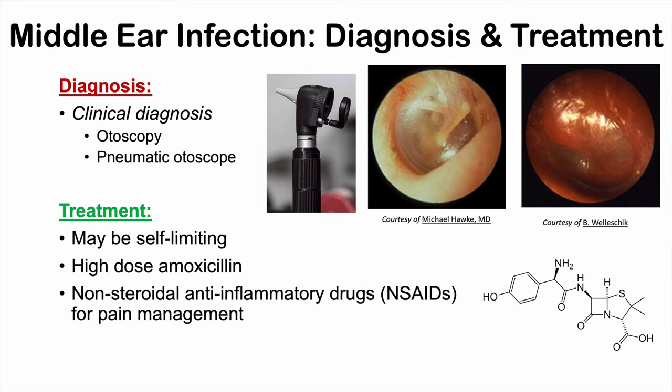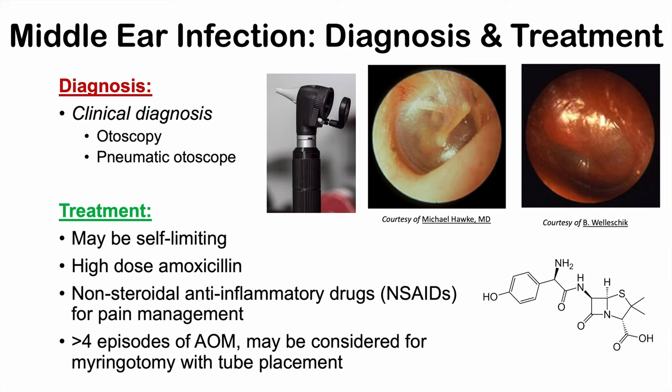In the case of a patient having four or more episodes of acute otitis media over the course of 12 months, they may be considered for a myringotomy with tube placement — this is why some children get tubes placed in their ears. To summarize: this is a clinical diagnosis; it may be self-limiting but can be treated with amoxicillin; NSAIDs are used for pain management; and tubes can be placed for individuals with four or more episodes per year.